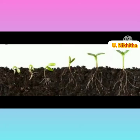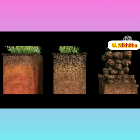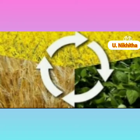Soil nutrients: Soil is a major source of nutrients needed by plants for growth. The three main nutrients are nitrogen, phosphorus, and potassium. Together they make up the trio known as NPK. Other important nutrients are calcium, magnesium, and sulfur.